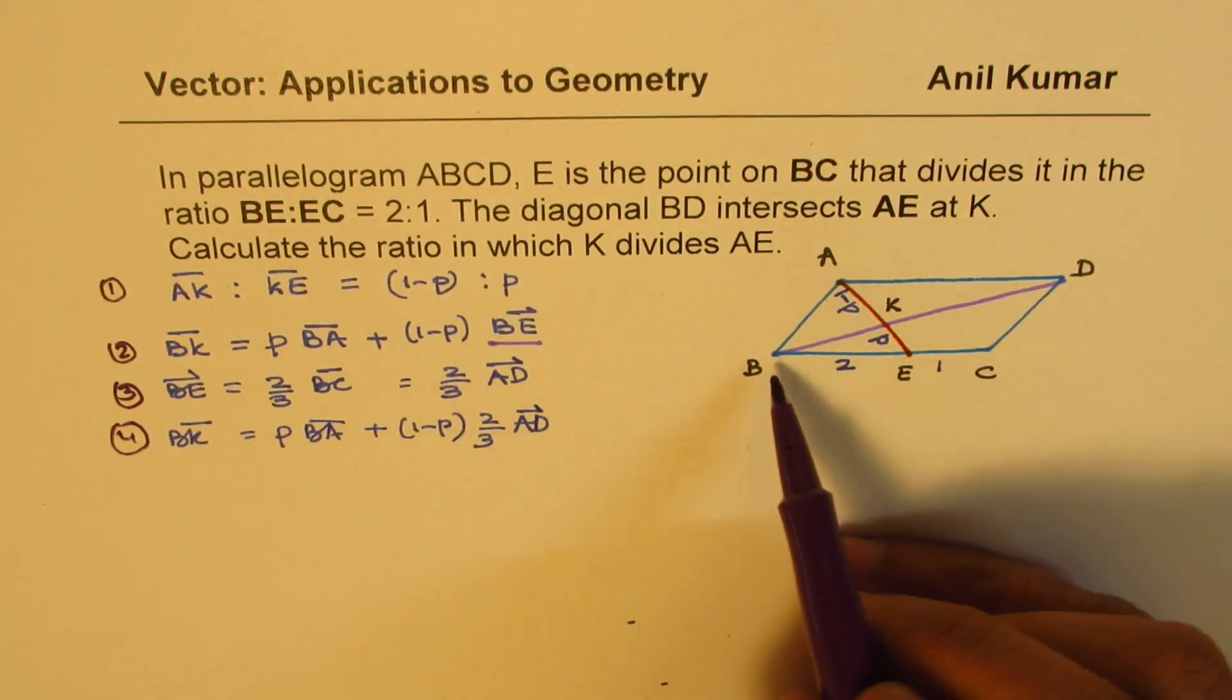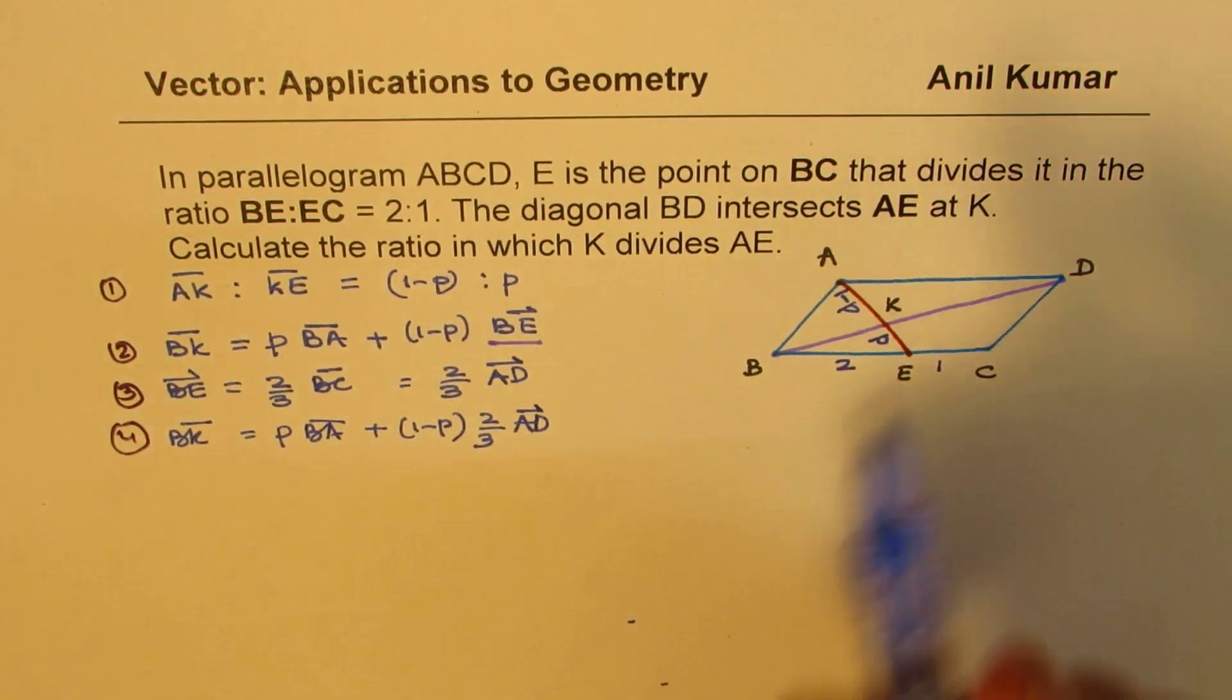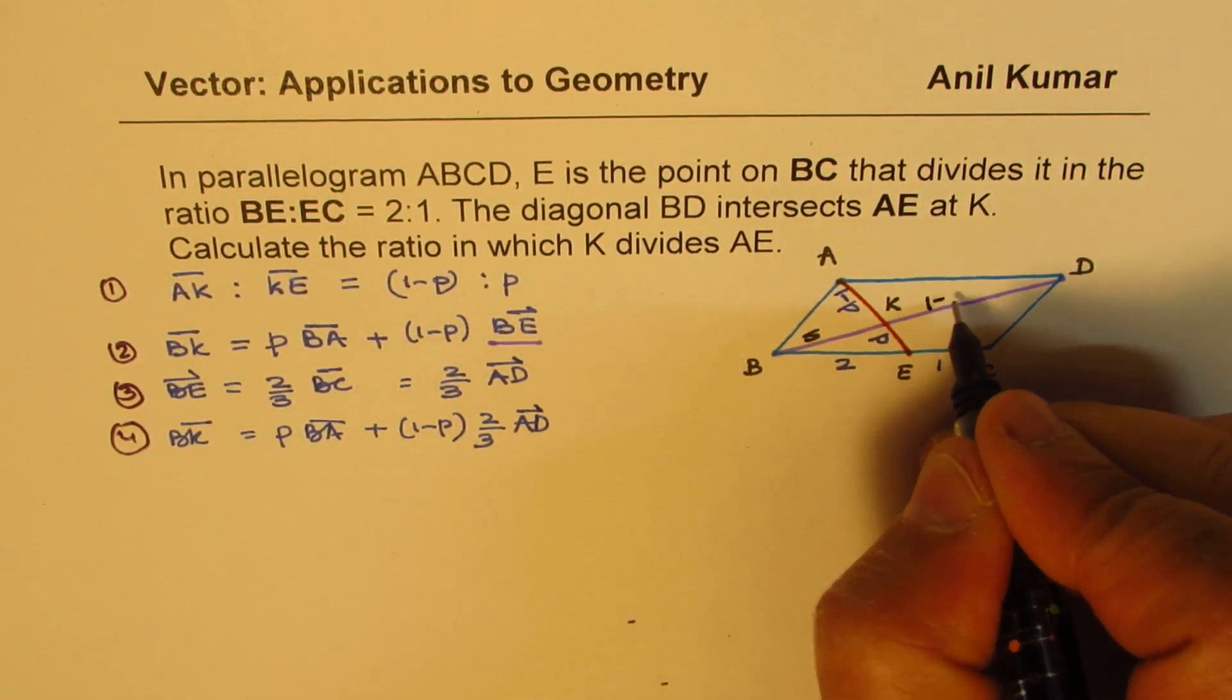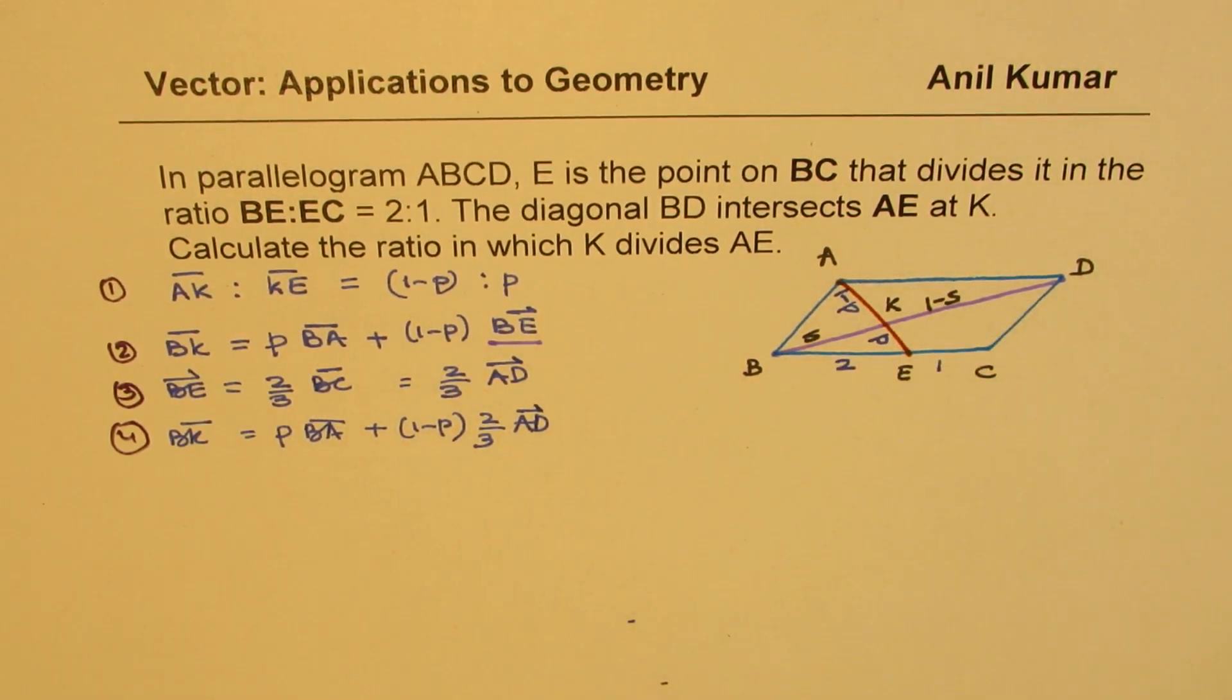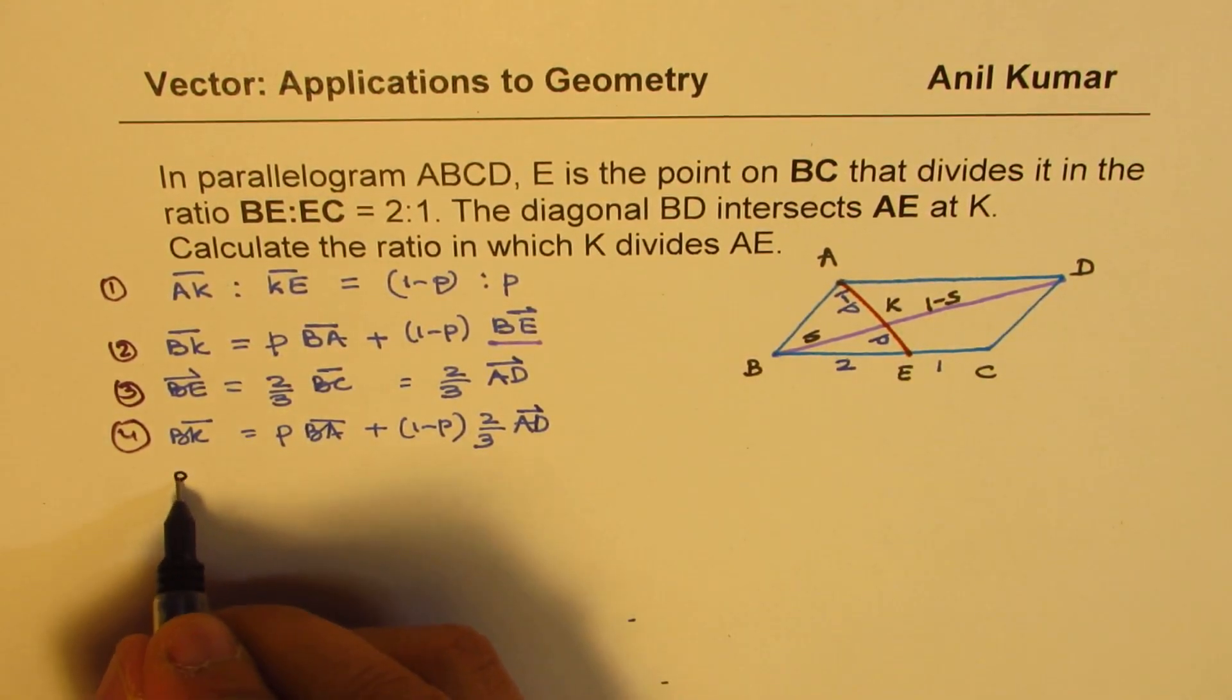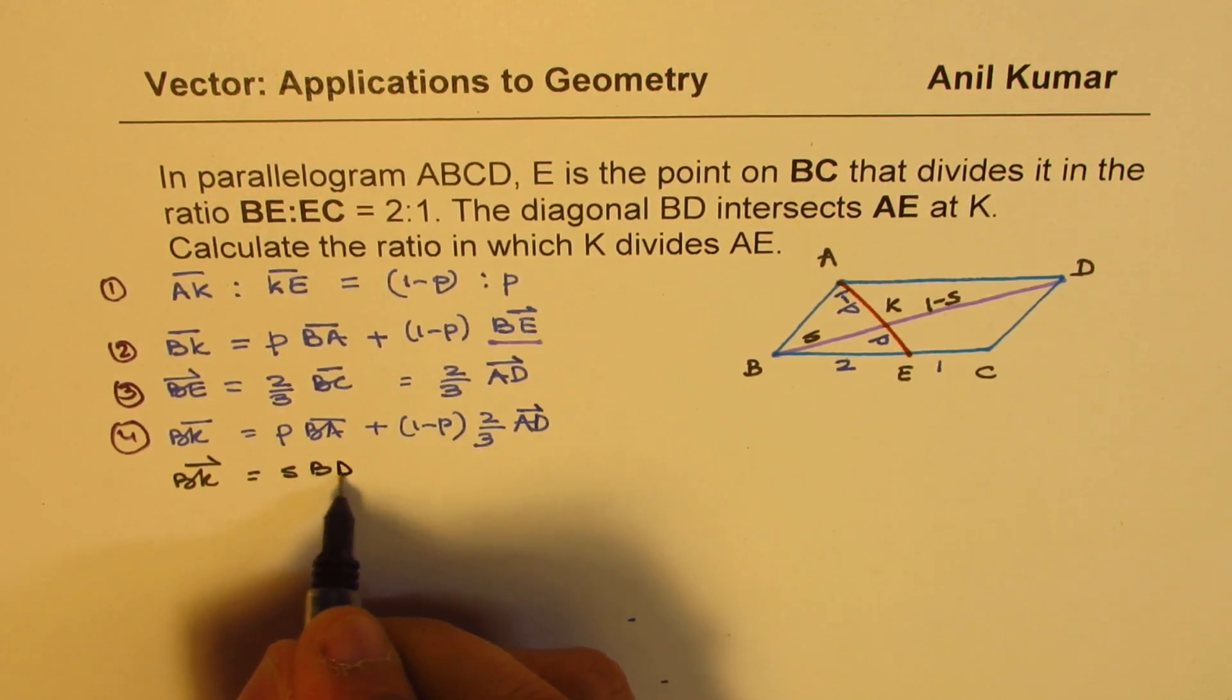So we have one relation of BK. Now, we'll try to find another relation of BK using the diagonal BD. Let me divide this in the ratio S:(1-S). The whole side is taken as 1 unit. So we can write BK = S·BD.